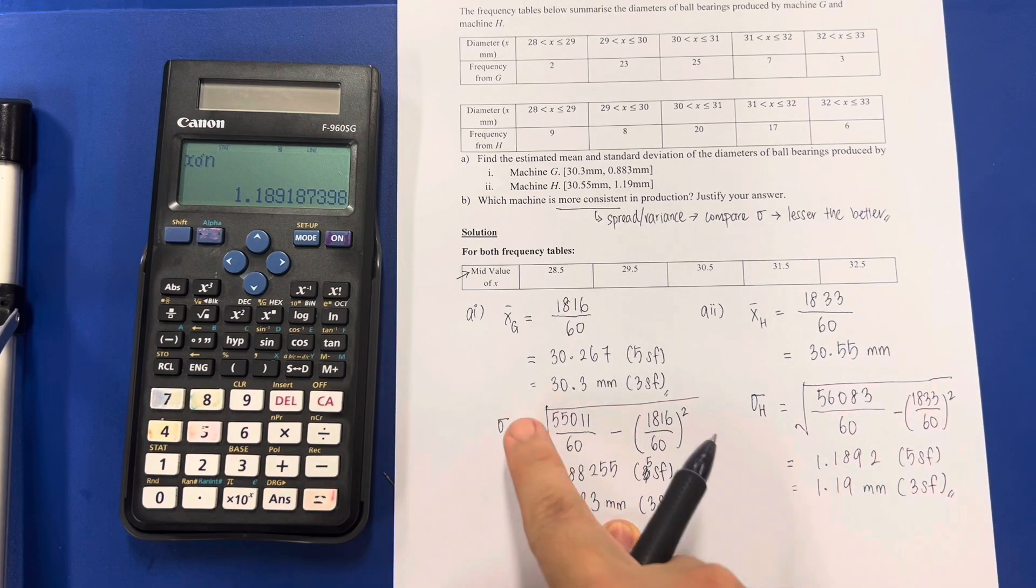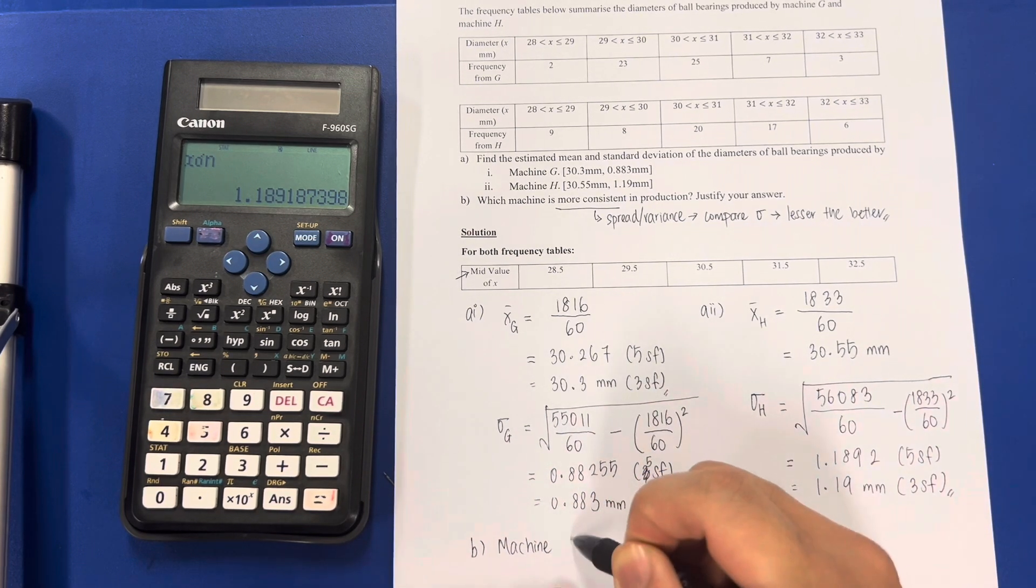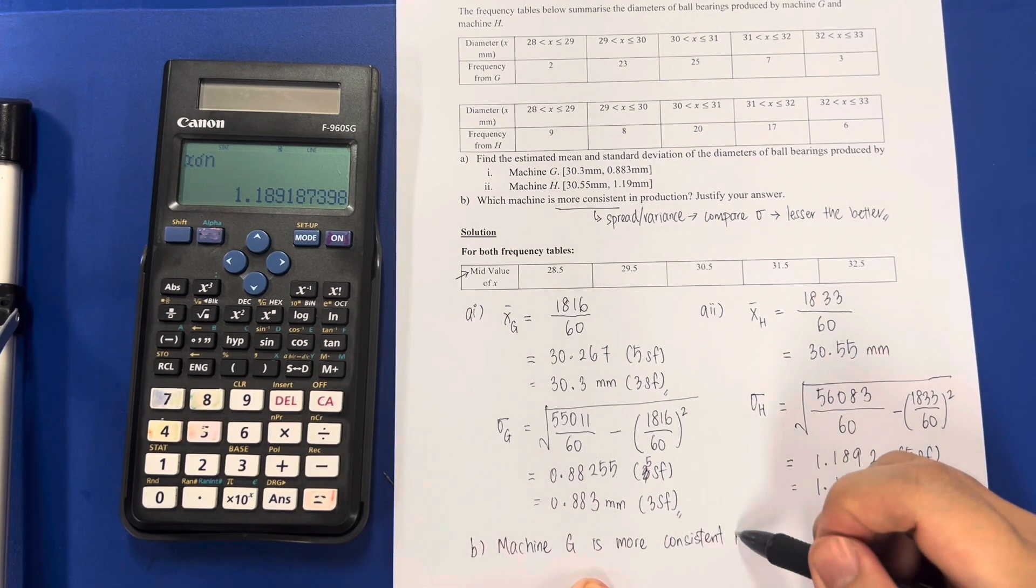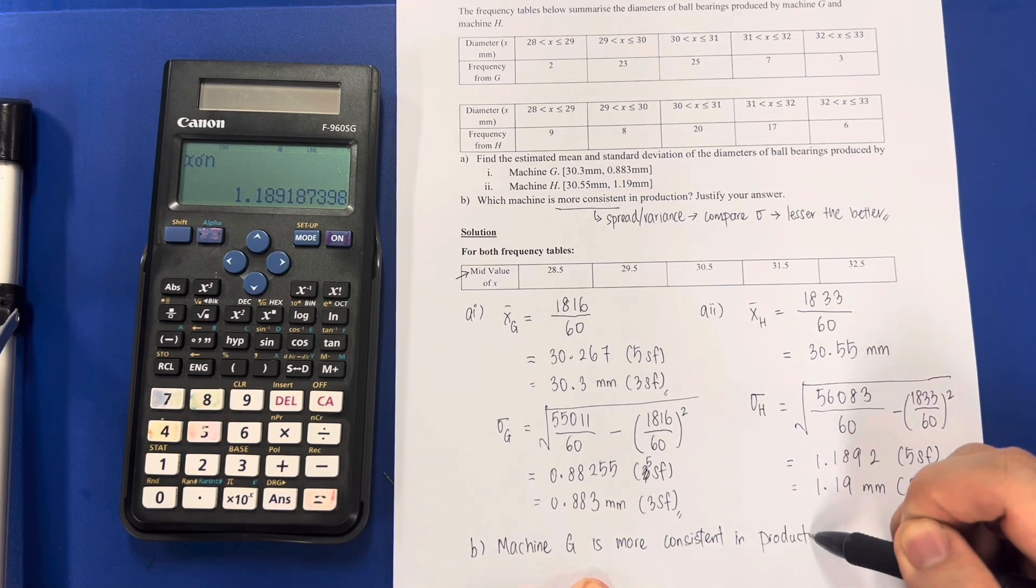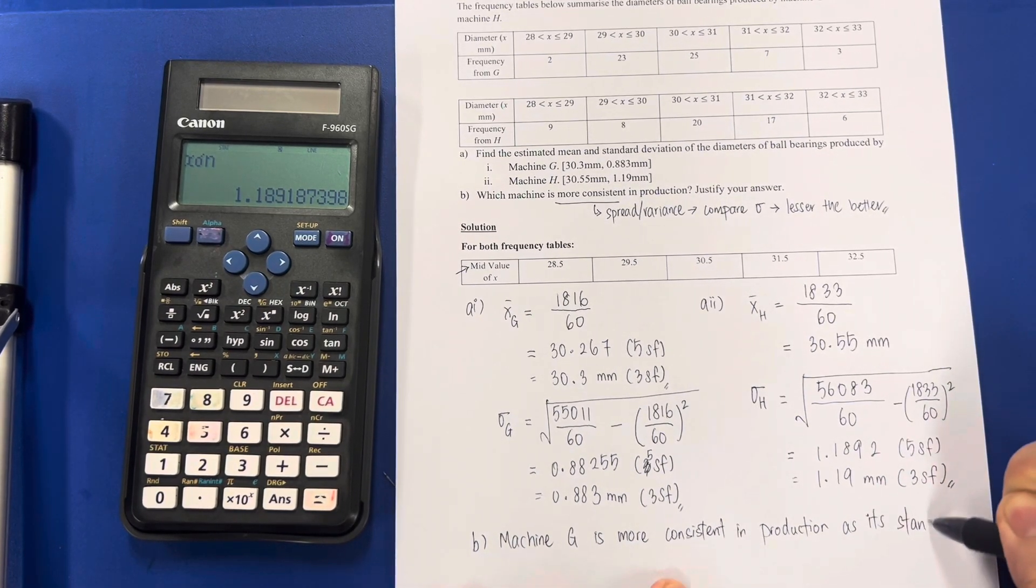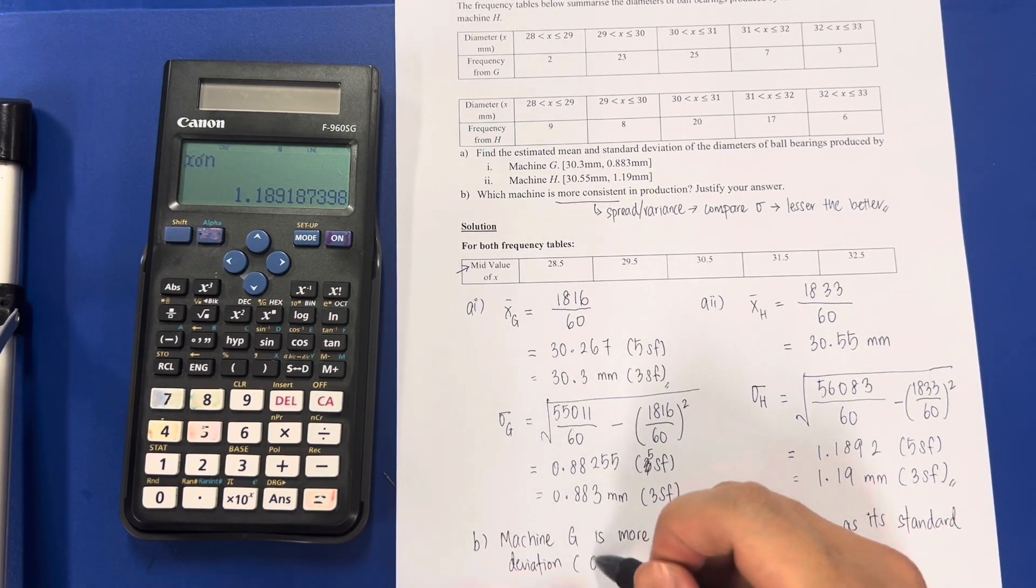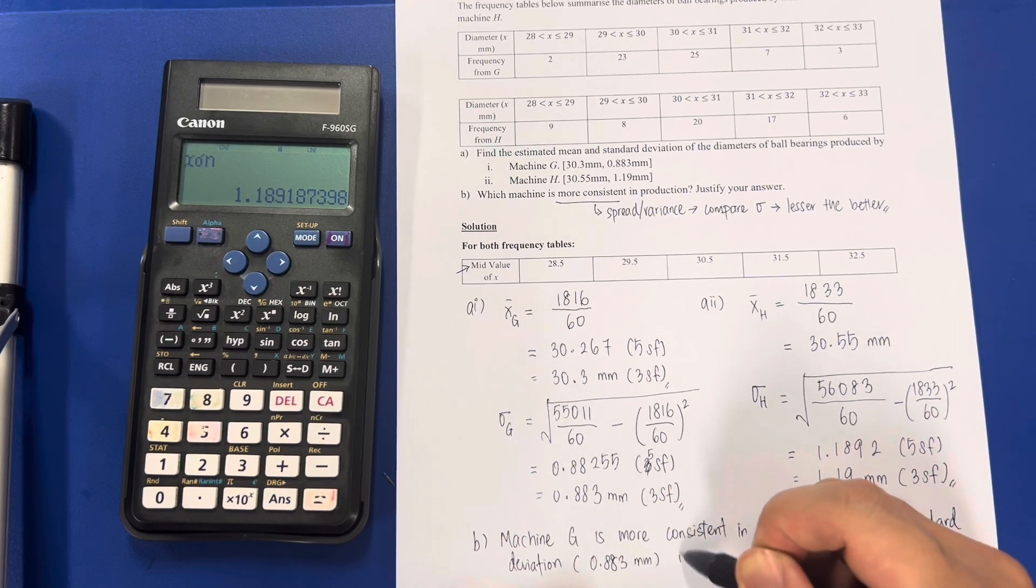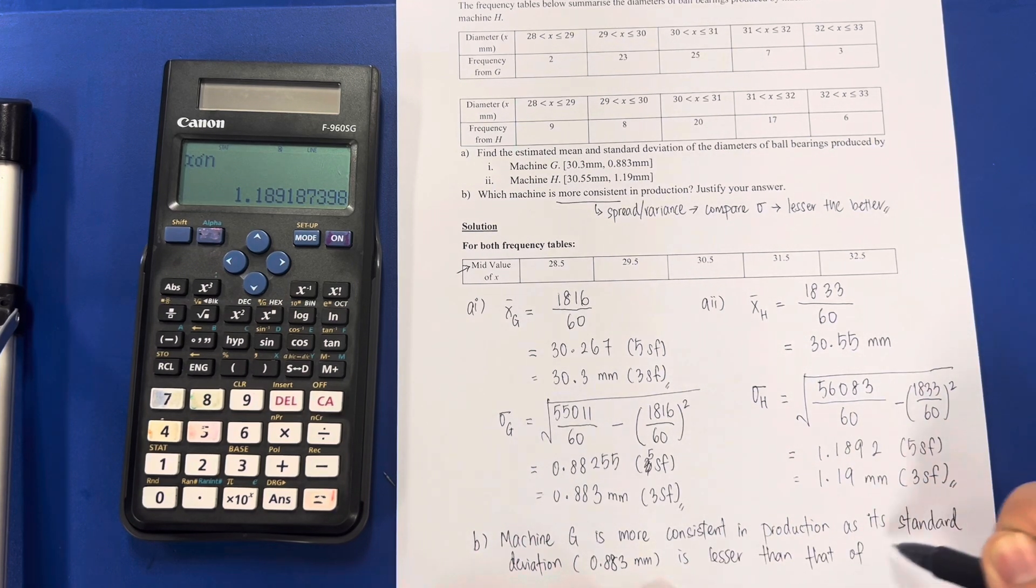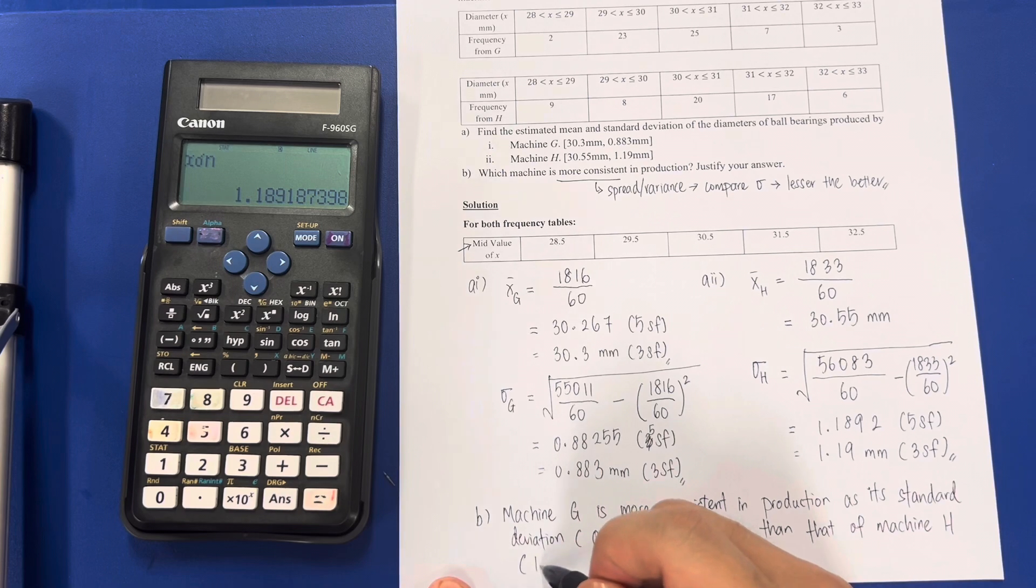Machine G is more consistent, yep. So machine G is more consistent in production. Why? S is standard deviation 0.883 mm is lesser than that of machine H. Do list up the value as well, 1.19 mm.